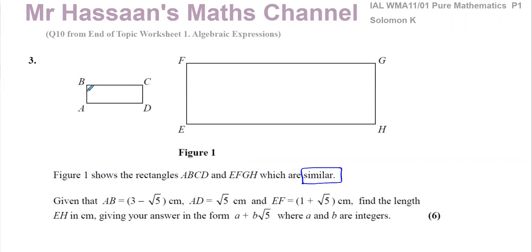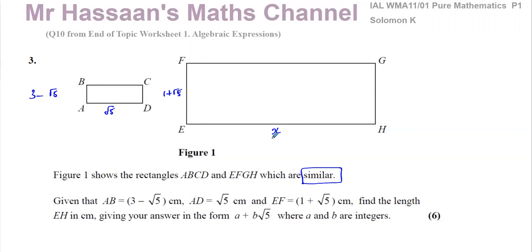Given that AB is equal to 3 minus root 5 — so AB is this side here, which is 3 minus √5 — and AD is equal to √5 centimetres, so AD is √5 centimetres. And EF is 1 plus √5, so this side is 1 plus √5 centimetres.